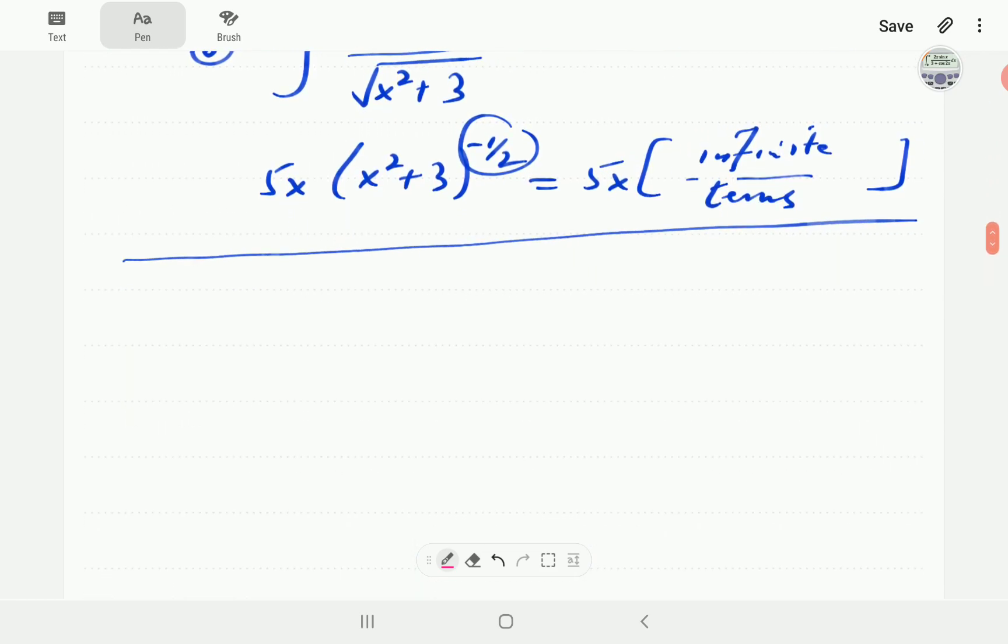So, the method of u-substitution is actually the reverse of the chain rule of differentiation. This is the reverse of the chain rule.